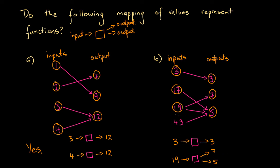We could check input 43, but we don't need to, because once we've determined there is at least one input associated with two or more outputs, we can say with certainty that this mapping of values is not a function. So the answer here is no, this is not a function, and we're done.